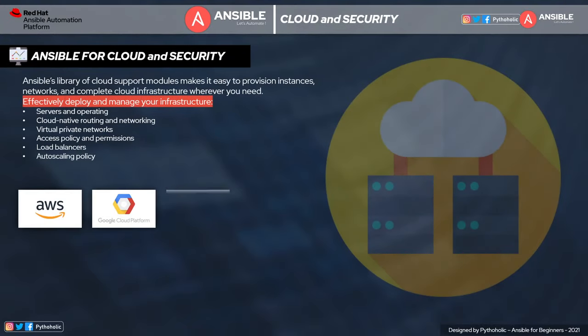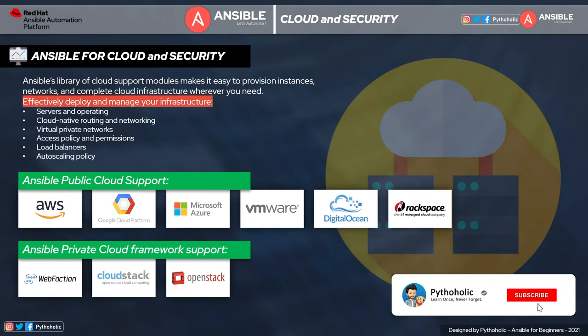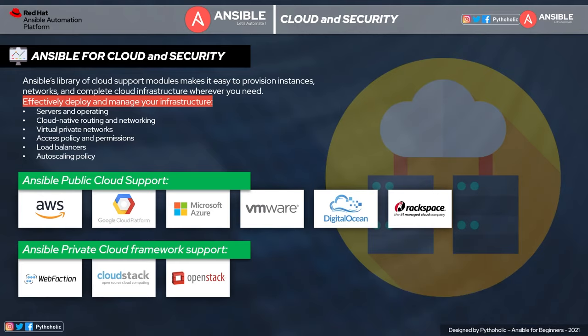Now let's come to something people are really interested in: Ansible for the cloud. Ansible has core libraries that provide a base to easily provision instances, networks, and complete cloud infrastructure wherever you need. With Ansible, you can deploy and manage servers, handle cloud-native routing and networking, create virtual private networks, set access policies and permissions, configure load balancers and auto-scaling policies, and much more. It supports widely used public cloud platforms like AWS, GCP, Azure, VMware, and DigitalOcean, and private cloud technologies like WebFaction, CloudStack, and OpenStack.